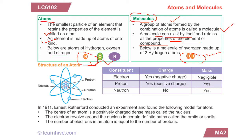A single H is the atom, and when two H combine together to form H2, this is the molecule. Now let us talk about the structure of the atom. The atom contains the nucleus, and the nucleus contains the protons, neutrons, and around it are the electrons.